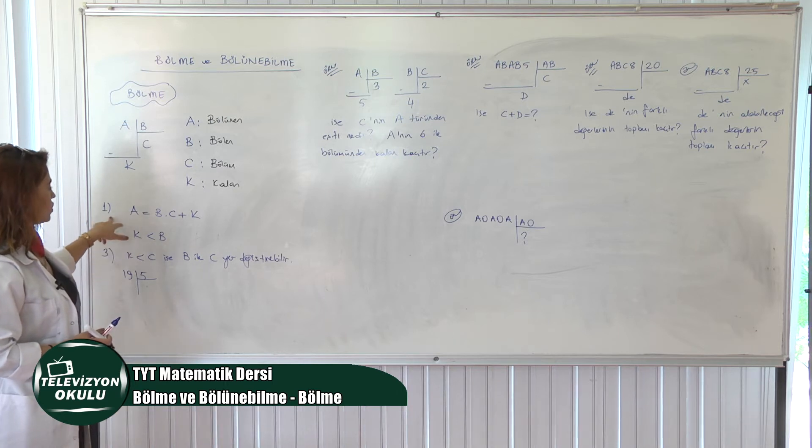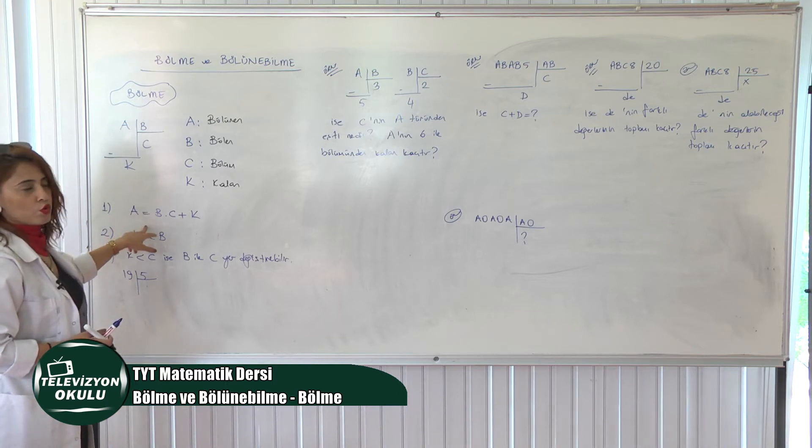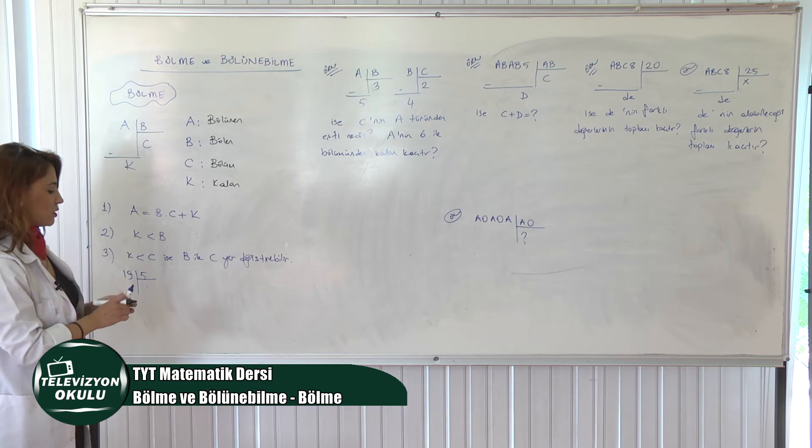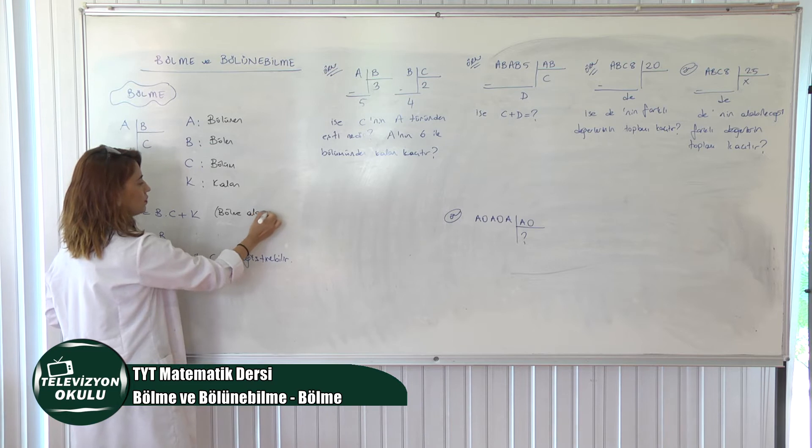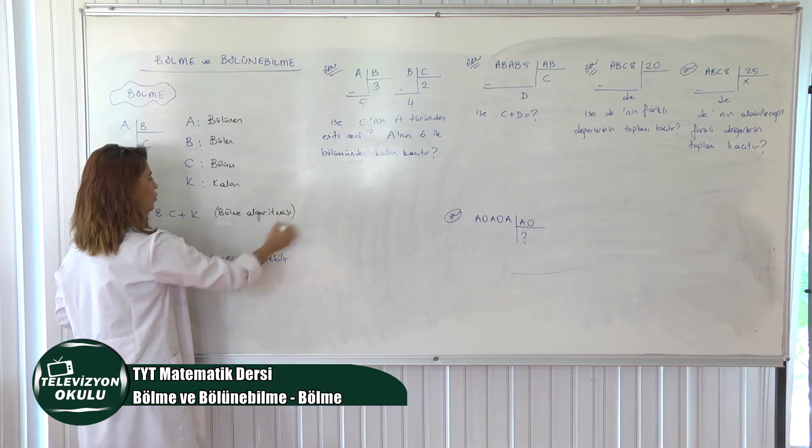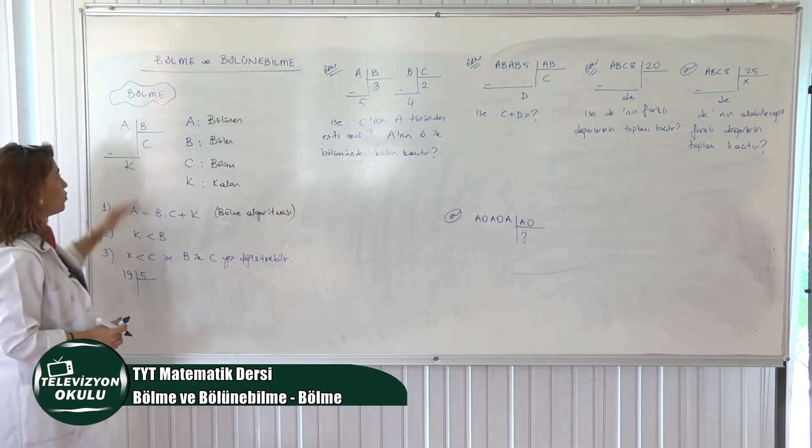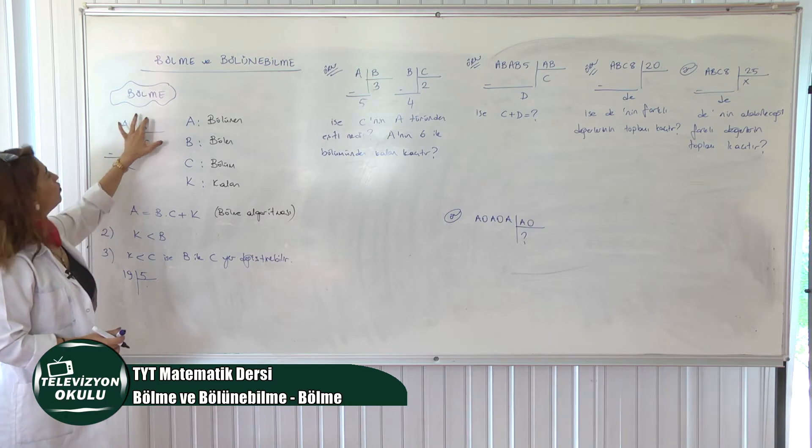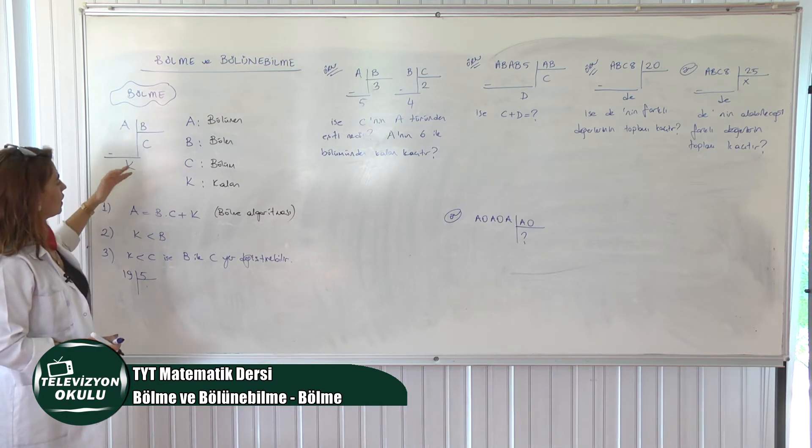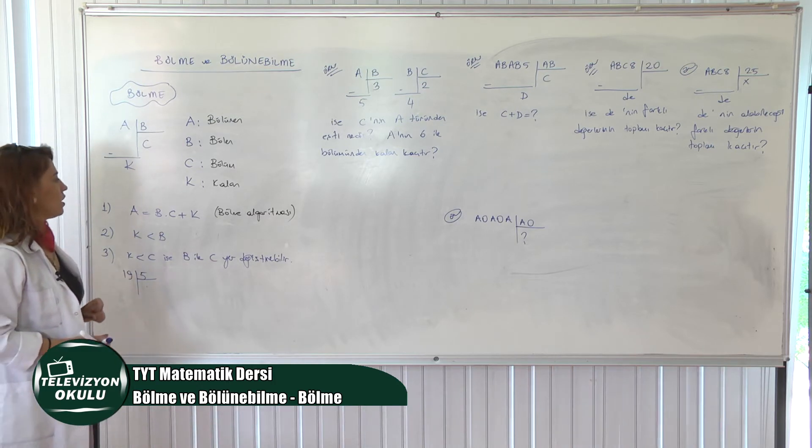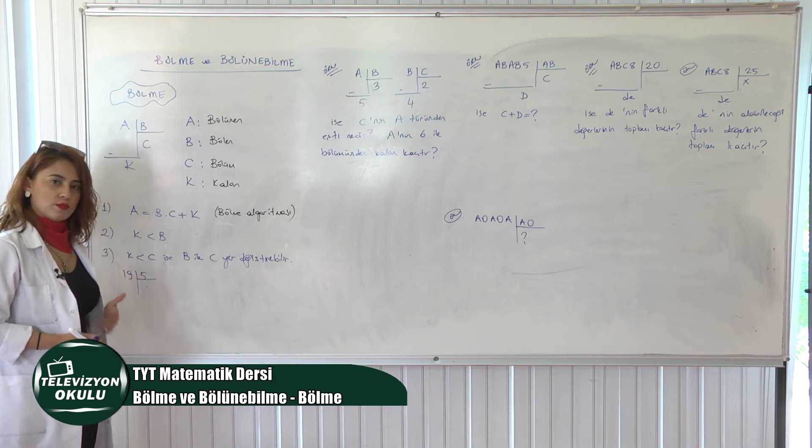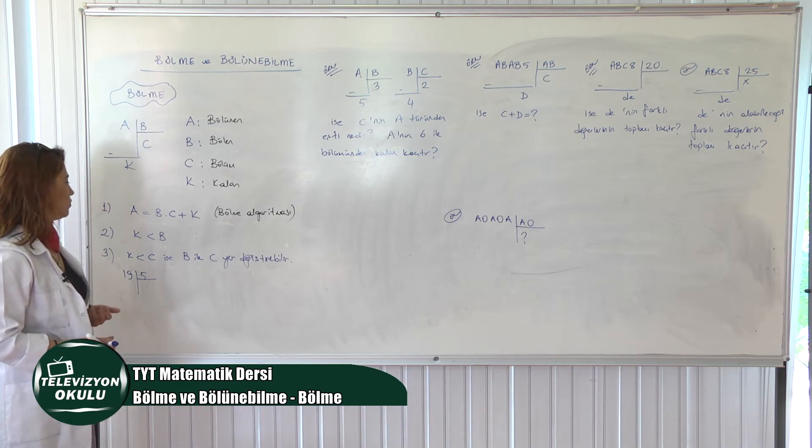Evet, birinci özdeşliğimiz şu. Buna biz bölme algoritması ya da bölme özdeşliği adını veriyoruz. Nedir peki? Bölünen sayı, bölenle bölümün çarpımı artı kalandır. Yani B çarpı C artı K'ya eşittir. Ayrıca bunu sağlaması olarak da, bölmenin sağlaması olarak da yapıyorduk değil mi?